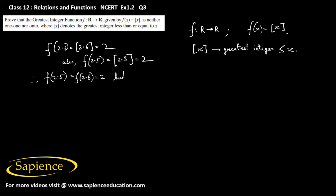But 2.5 is not equal to 2.6. So the function f(x), which is [x], the greatest integer function, is not one-one.